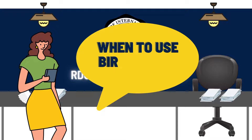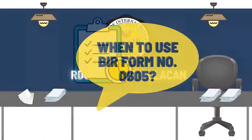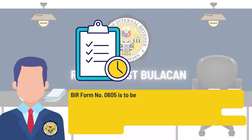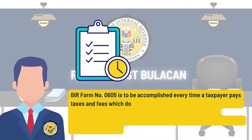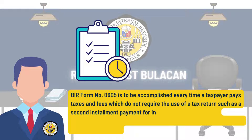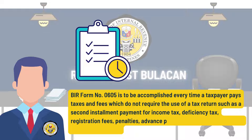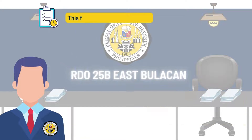BIR Form 0605 is to be accomplished every time a taxpayer pays taxes and fees which do not require the use of a tax return, such as a second installment payment for income tax, deficiency tax, registration fees, penalties, advance payments, deposits, installment payments, etc.